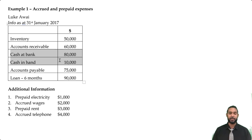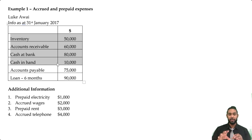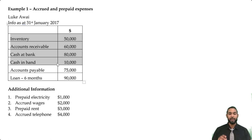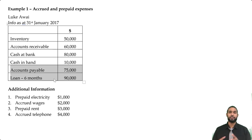Cash at bank and cash in hand are already in liquid form, so they come last in the order of permanence. This is how the exact order will appear in the balance sheet. There is another order called the order of liquidity, but I won't be covering that in this particular video — I may do a follow-up. Now let's look at the rest of the information: accounts payable and a loan for six months, both of which are liabilities.